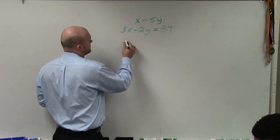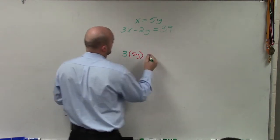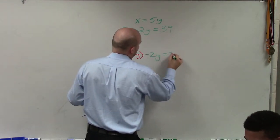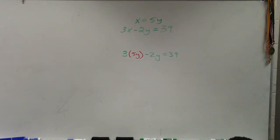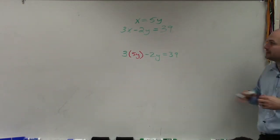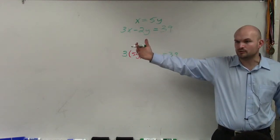So therefore, I have 3 times 5y minus 2y equals 39. Does everybody see at least what I did? Maybe not so much as far as the understanding of why I'm doing it. But does everybody see at least what I did and how it was similar to the previous problems we were working on?